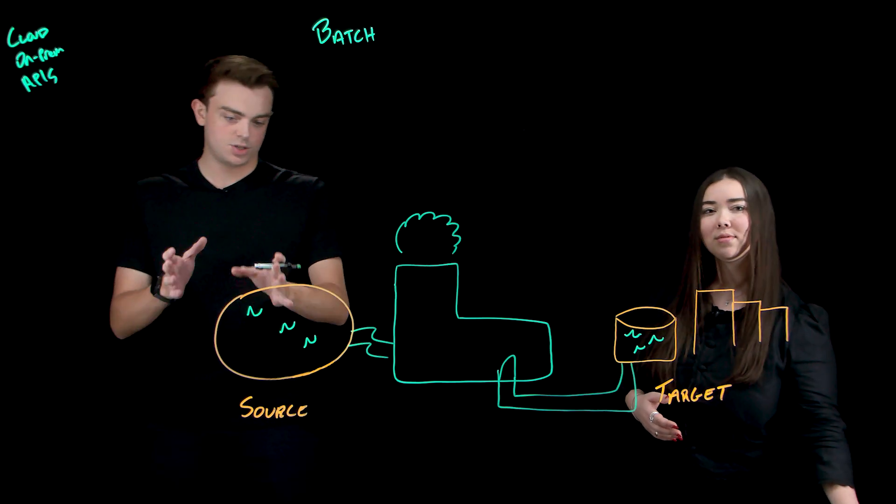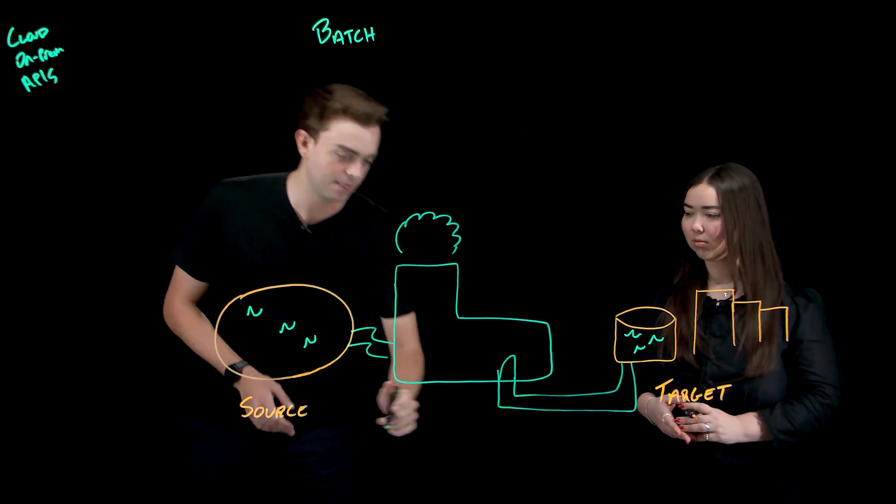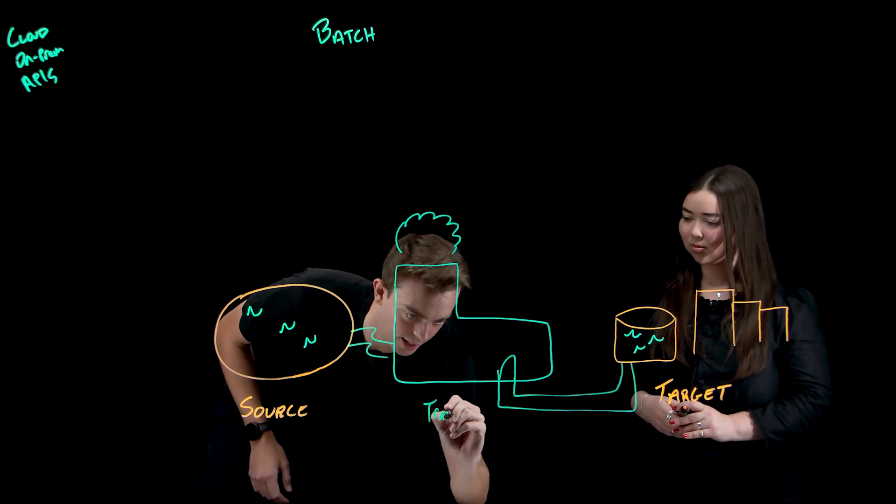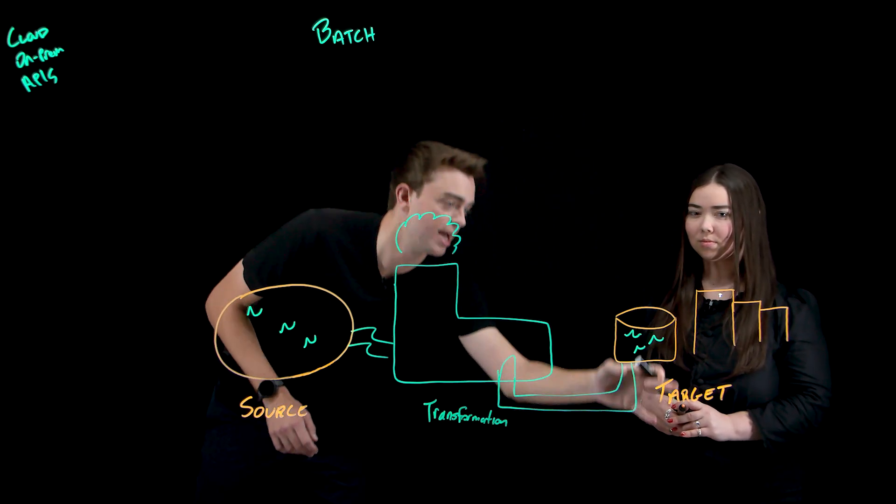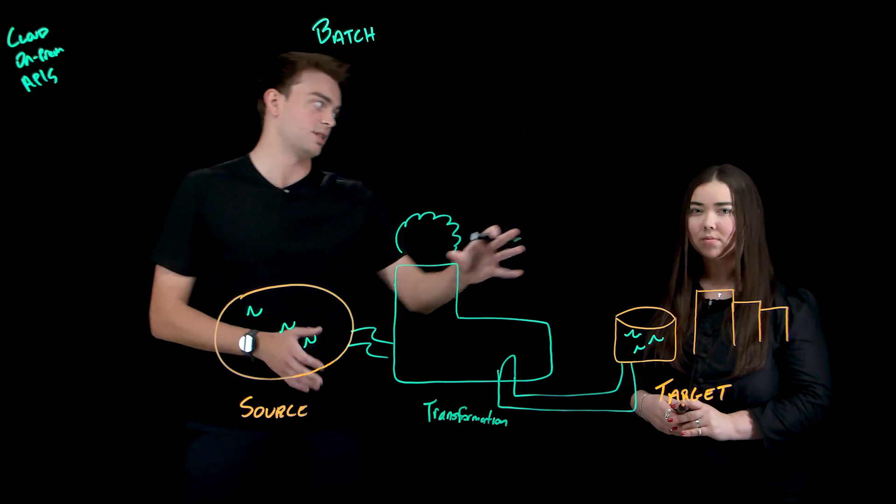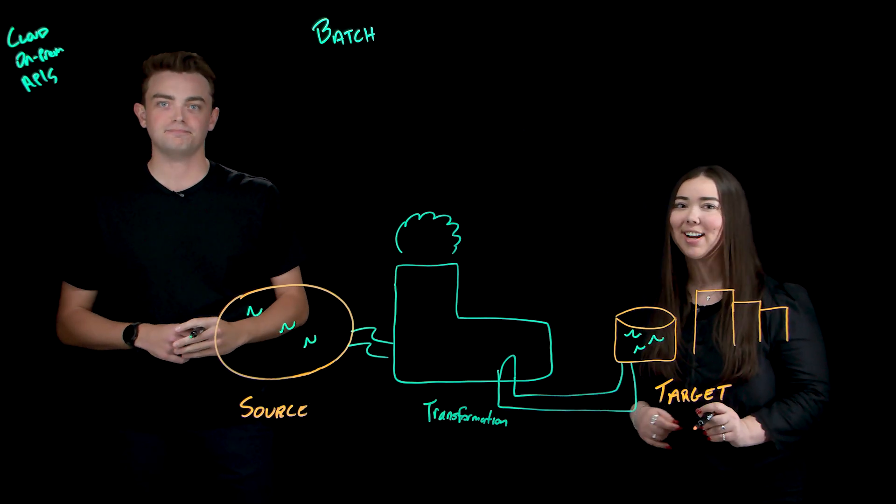So it's something like this with the source over here as our lake, then the transformation occurring at the power plant, and then the target being our city and the buildings and the people living in it. Exactly, you got it.